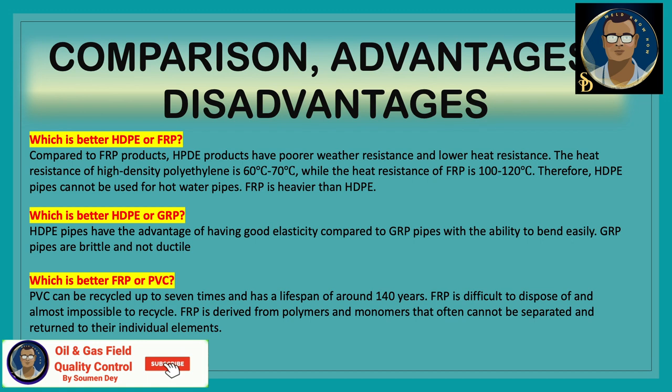Now let us compare advantages and disadvantages. Which is better: HDPE or FRP? Compared to FRP, HDPE products have poorer weather resistance and lower heat resistance. The heat resistance of high density polyethylene is 60 to 70 degrees Celsius, while FRP is 100 to 120 degrees Celsius. Therefore, HDPE pipes cannot be used for hot water pipes. FRP is also heavier than HDPE.